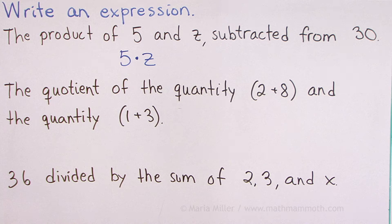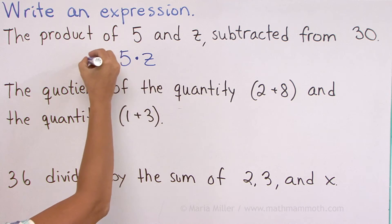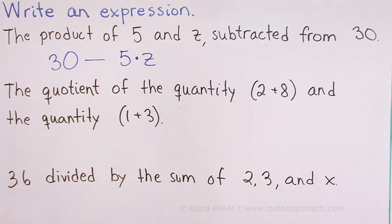Okay. Is it this minus 30 or 30 minus that? Which one? This thing is subtracted from 30. So, it's 30 minus 5 times z.